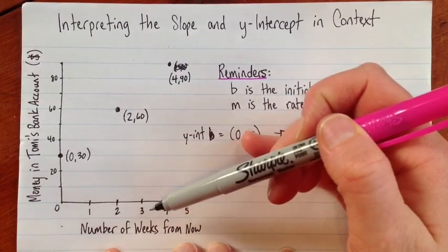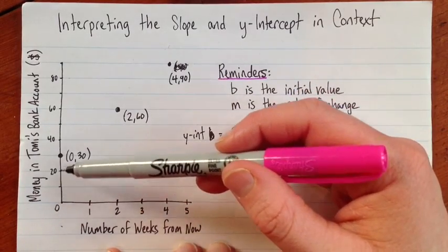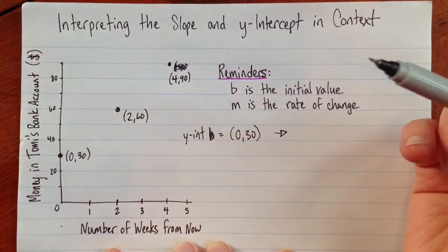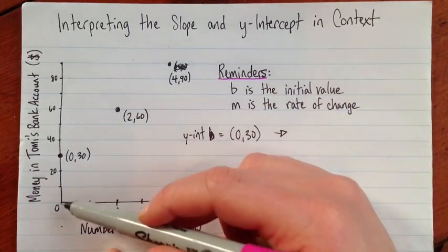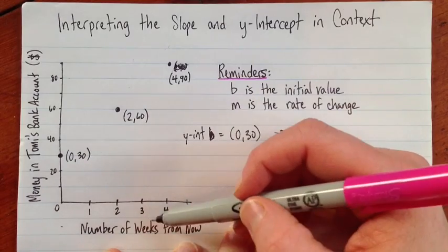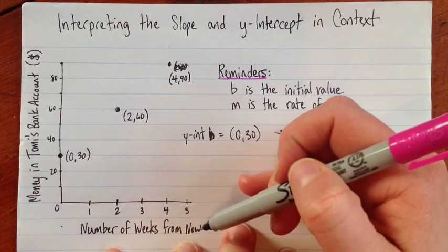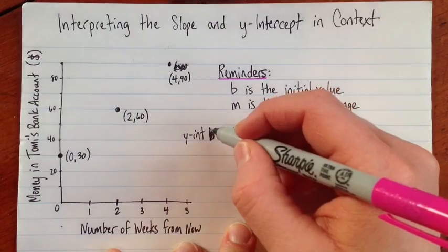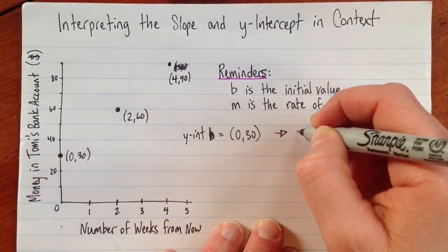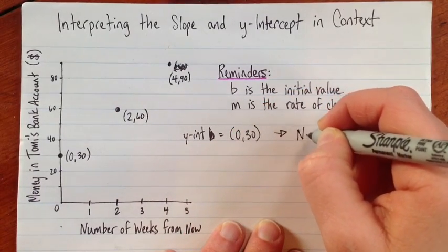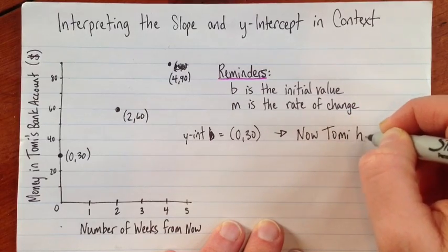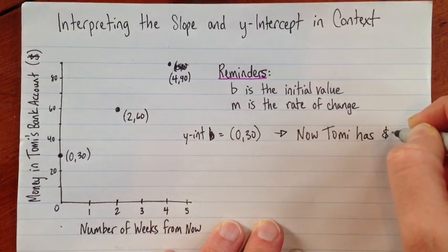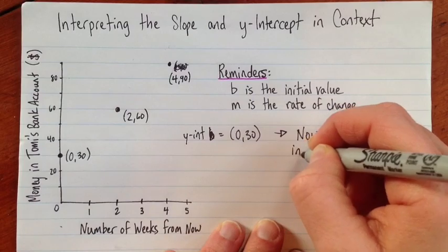At the beginning of this graph, right now, Tommy has $30 in her bank account. So that's kind of like the start. It'll often be something like that now, or it might be the number of weeks starting on January 1st, and then in that case, the start is January 1st. So we've got, right now, Tommy has $30 in her account.